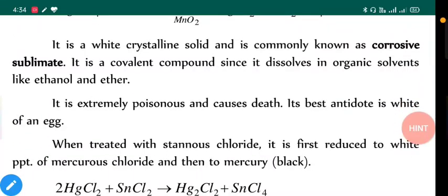It is a covalent compound since it dissolves in organic solvents like ethanol and ether. It is extremely poisonous and can cause death. Its best antidote is white of an egg. When treated with stannous chloride, it is first reduced to white precipitate of mercurous chloride and then to mercury black.